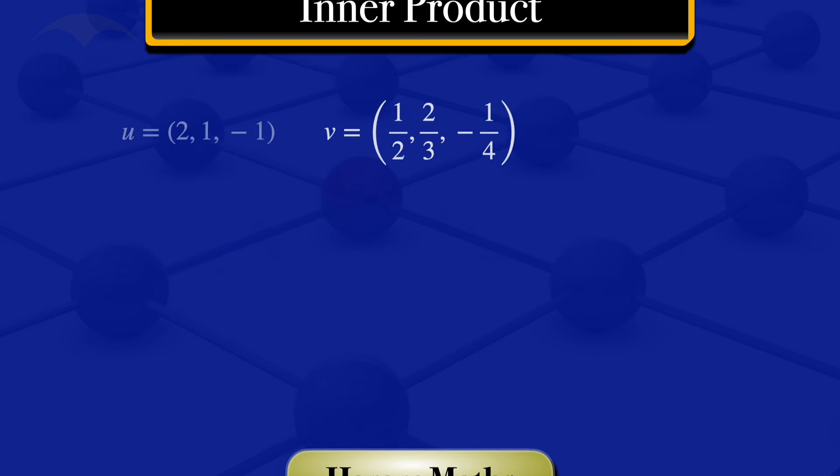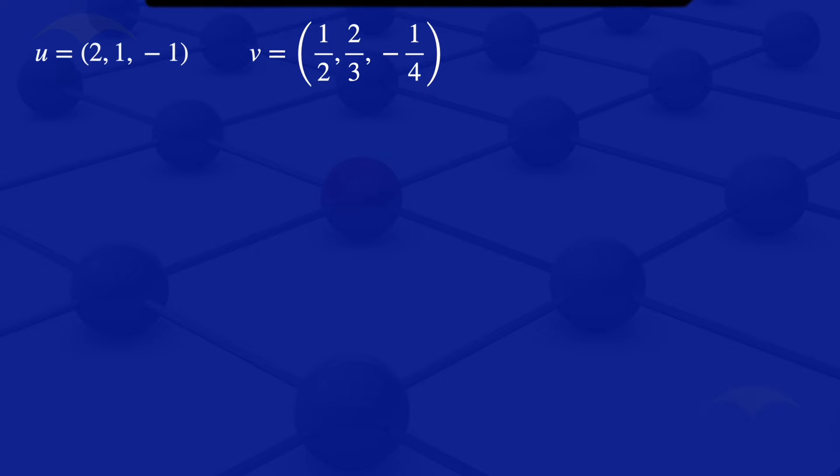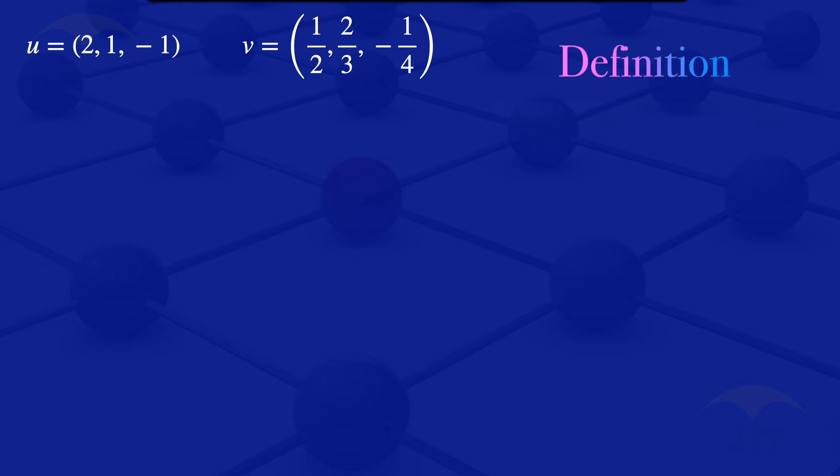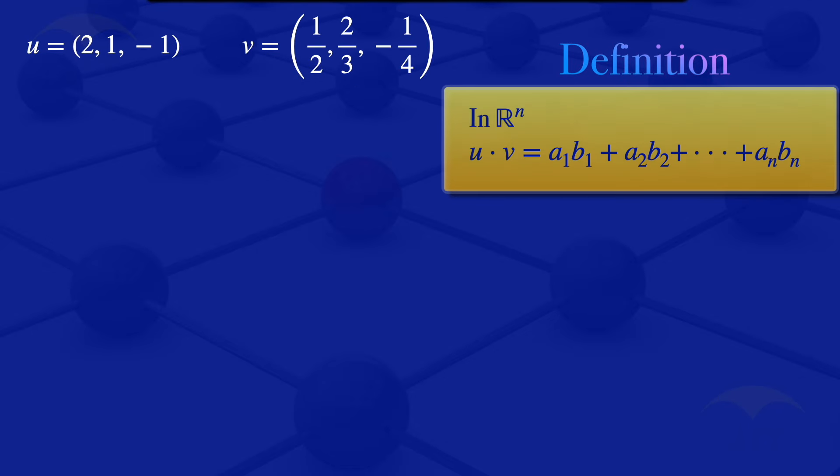By definition, the inner product of u and v in Rⁿ equals a₁b₁ + a₂b₂ + ... + aₙbₙ. The n there is the dimension of the vector; in this case, we have 3 dimensions.